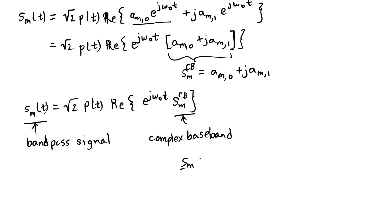And that complex baseband is very much like our vector s_m which was written as a_m,0 and a_m,1 as a two-dimensional vector, except now we're writing it as a complex value that has a real and an imaginary part. And so we're also going to call this real part the in-phase and we're going to call this imaginary part the quadrature.